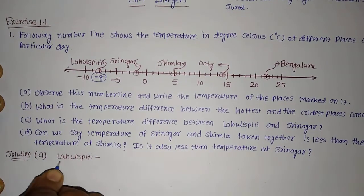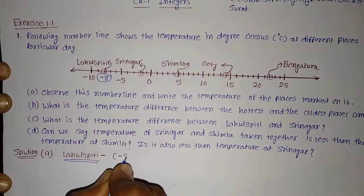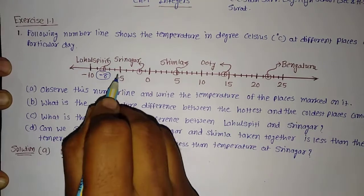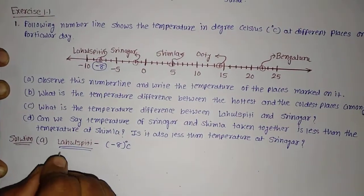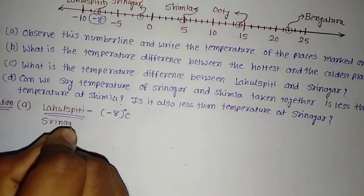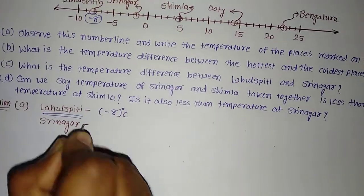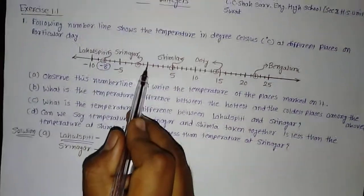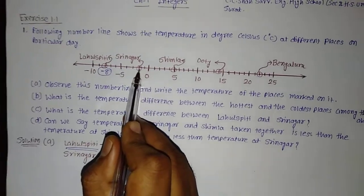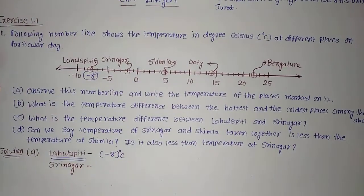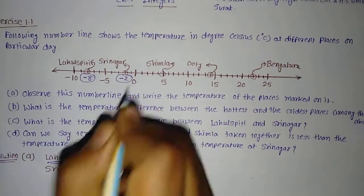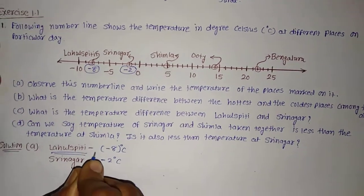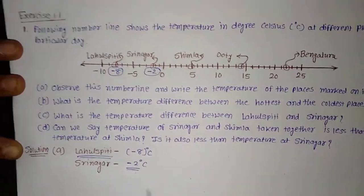I will write it: the temperature of Lahulspiti is minus 8 degree Celsius. The second place is Srinagar. Let us see the temperature on the number line — Srinagar is here. This is 0, I will go at the left hand side — this is minus 1 and minus 2. So the temperature of Srinagar is minus 2 degree Celsius.